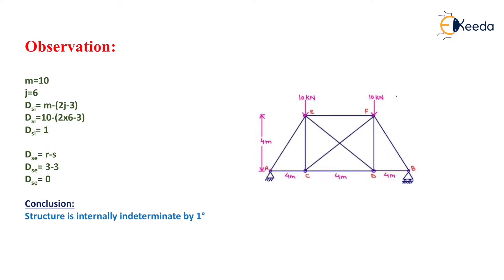Now we need to find the degree of external static indeterminacy. At support A there will be 2 reactions and at support B there will be only 1 reaction. The formula is R minus S. Here R equals 3 because 3 external reactions act on this truss, and the number of equilibrium conditions S for a truss equals 3. So the total external static indeterminacy equals 0.